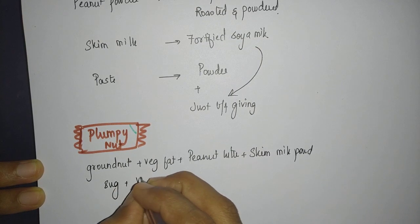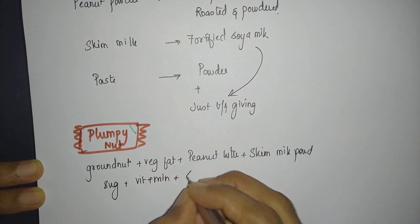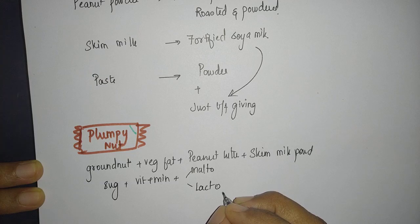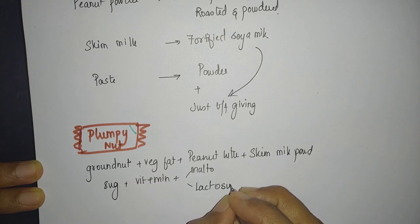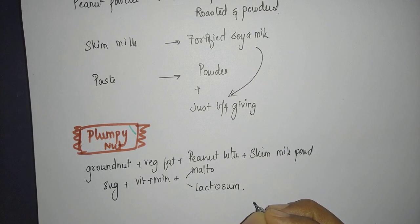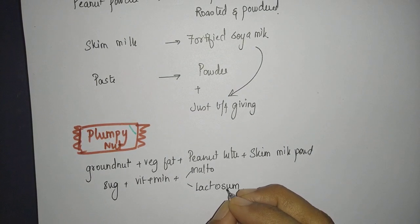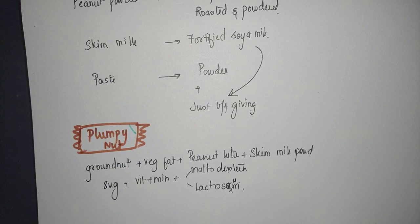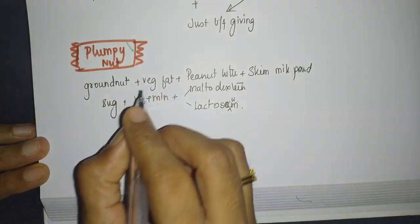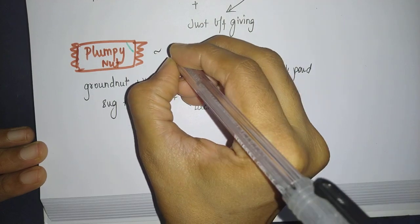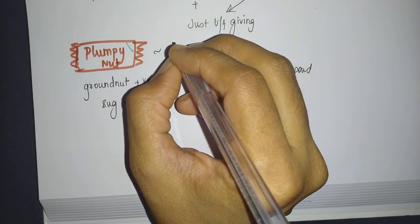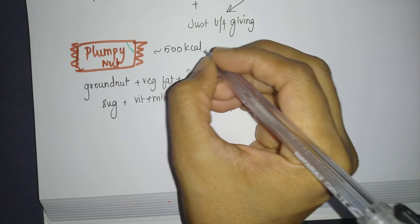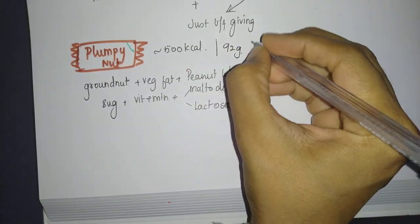Sugar, then vitamins and minerals, then extra maltodextrin and lactose serum—sorry, maltodextrin and lactose serum. These are the contents of Plumpy Nut. One sachet contains approximately 500 kilocalories, and that is what is advised. Each sachet is approximately 92 grams, and this is similar to F-100 as we already discussed.